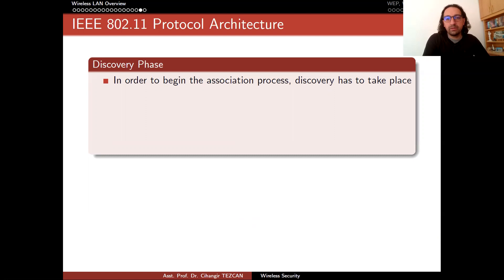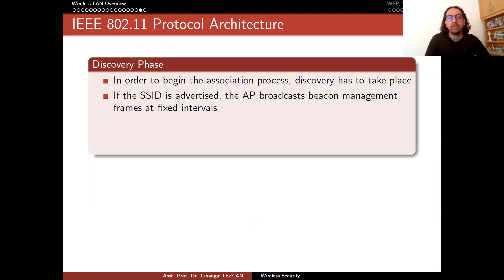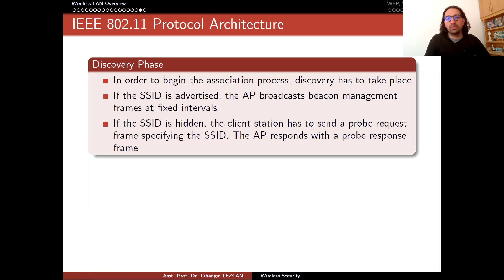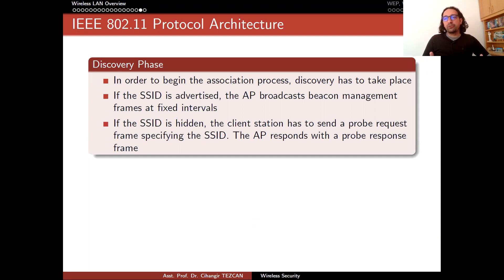In the discovery phase, to begin the association process, discovery must first take place. If the SSID is advertised, the access point broadcasts beacon management frames at fixed intervals. If the SSID is hidden, the client station must send probe request frames specifying the SSID. The access point then responds with a probe response frame. For this to work, your device must be capable of sending a probe request.